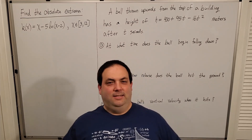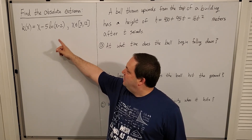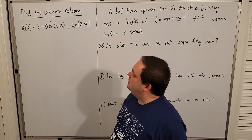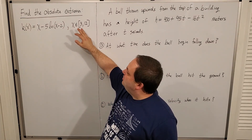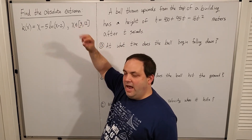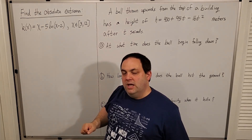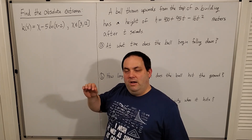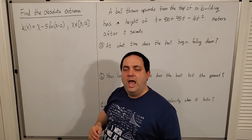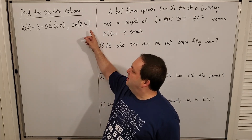More applications: find the absolute extrema of k(x) on the closed interval [3, 12]. It's key to notice this is a closed interval. The rule says if a function is continuous on a closed interval, it must have an absolute max and absolute min, and they can only occur at endpoints or critical points.